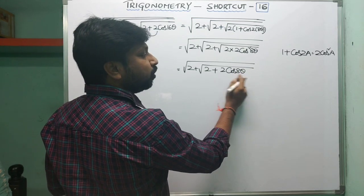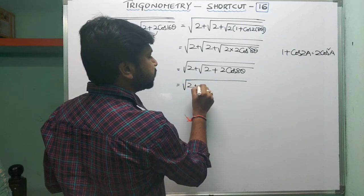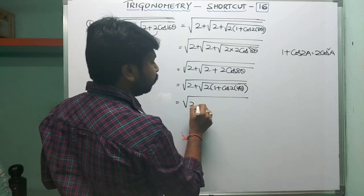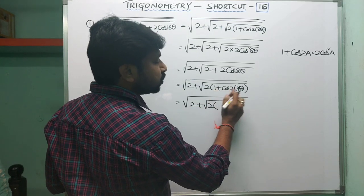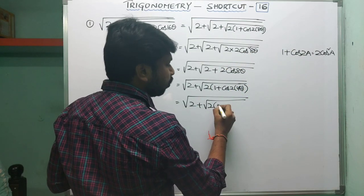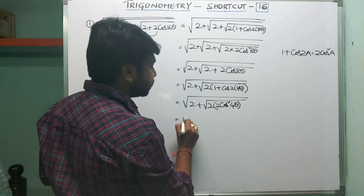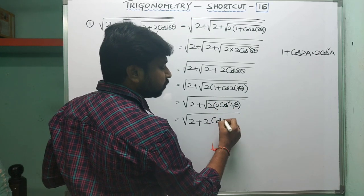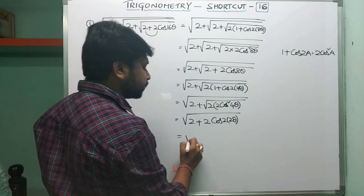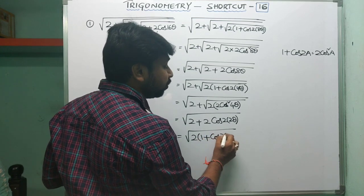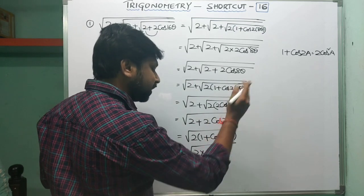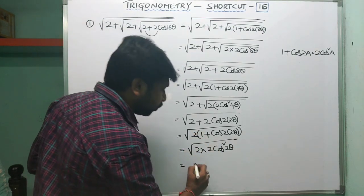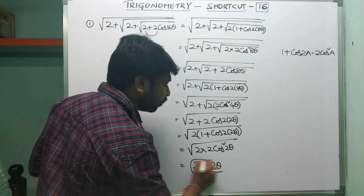Again take 2 common, writing 2 into cos(4θ) combination, you get 2 plus square root of 2 into (1 + cos(2×4θ)). Applying the same formula, 1 + cos(2a) = 2cos²(a), with a = 4θ, this gives square root of 2 plus 2cos²(4θ), which simplifies to square root of 2 plus 2cos(4θ), that is cos(2×2θ). Again taking 2 common, 2cos²(2θ), with a = 2θ, gives 2cos(2θ). So 2cos(2θ) is your answer.